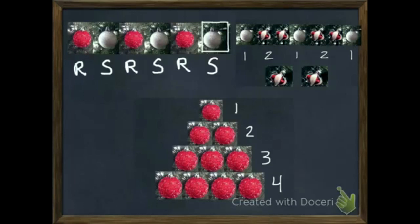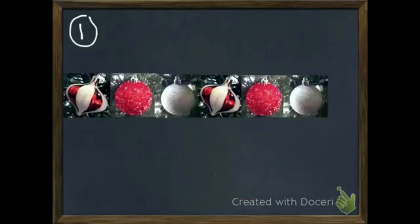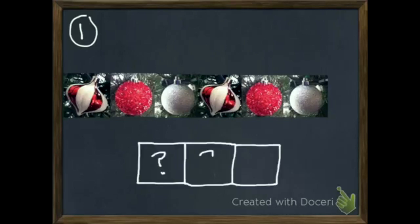Now that we've done a few examples together, I want you to try and do these four on your own. Number one is slightly more complicated — we have three different ornaments: stripe, red, silver, stripe, red, silver. What you need to write down in your notebook is what will the next three ornaments be. Pause if you need to, or just keep playing for question number two.